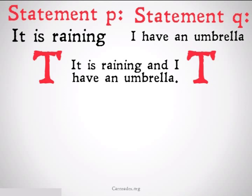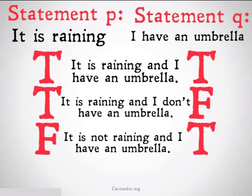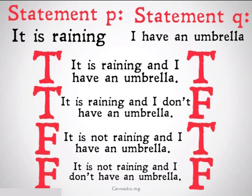They're both true: it is raining and I have an umbrella. P is true and Q is false: it is raining and I don't have an umbrella. P is false but Q is true: it is not raining and I have an umbrella. Or they're both false: it is not raining and I don't have an umbrella. These are four separate outcomes based on the possible truth values of these statements, and the second one is really unfortunate.